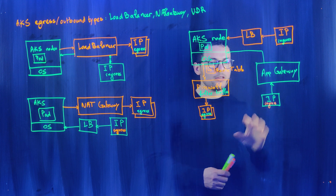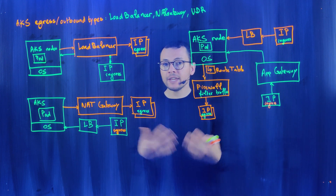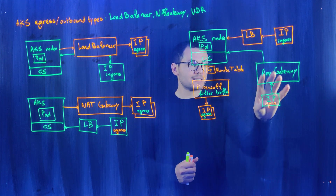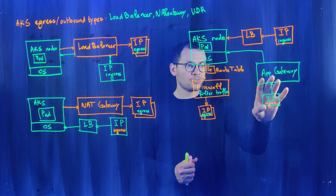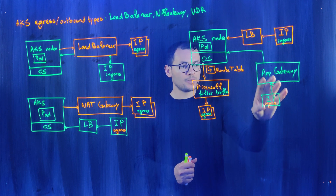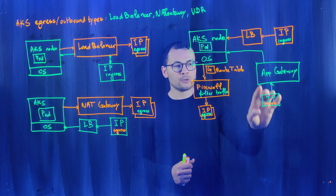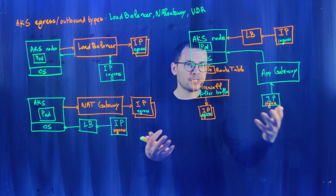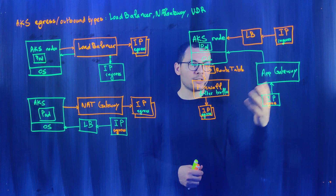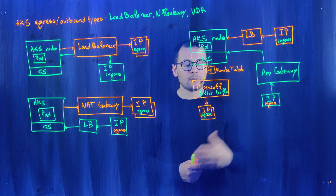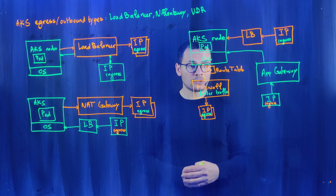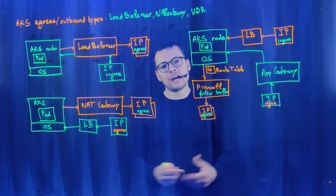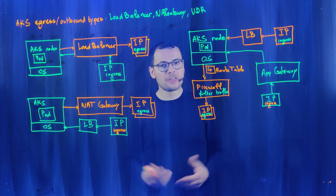The AKS landing zone implementation uses this second option — an Application Gateway to manage ingress traffic. Of course, you can replace it with another ingress controller if you prefer. I hope this was helpful.